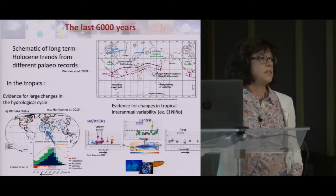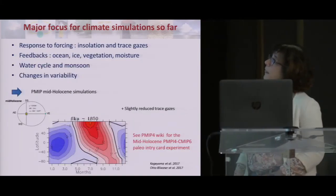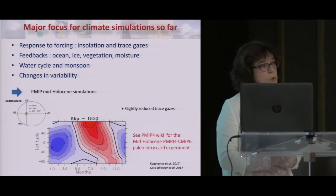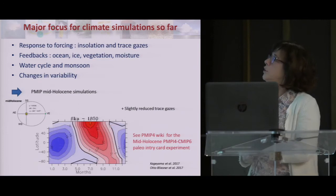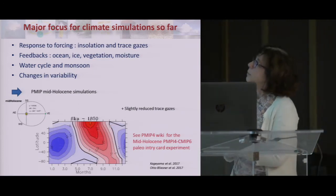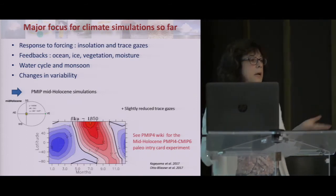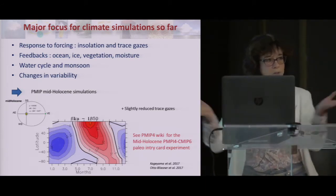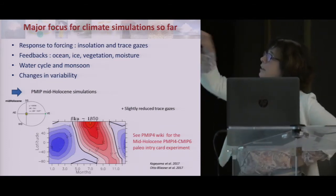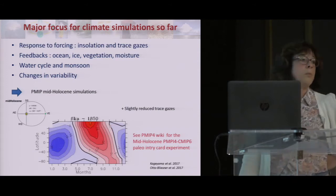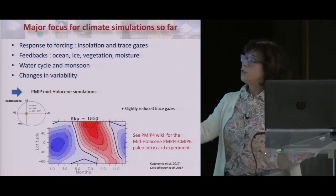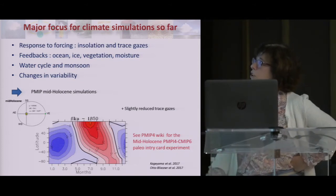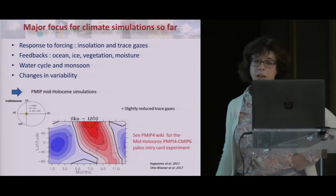There's lots of activity going on, both from the data and the modeling. With the big model I'm using, it was more what we call snapshot experiments — you choose a period, put the boundary conditions, and look at what's going on, even at variability in an equilibrated state. The question was to see how the model responds to insolation and trace gases, what's the feedback from ocean, ice, vegetation, and moisture in the atmosphere, and changes in variability. These are the famous PMIP simulations, and we now have a new set as part of CMIP6.